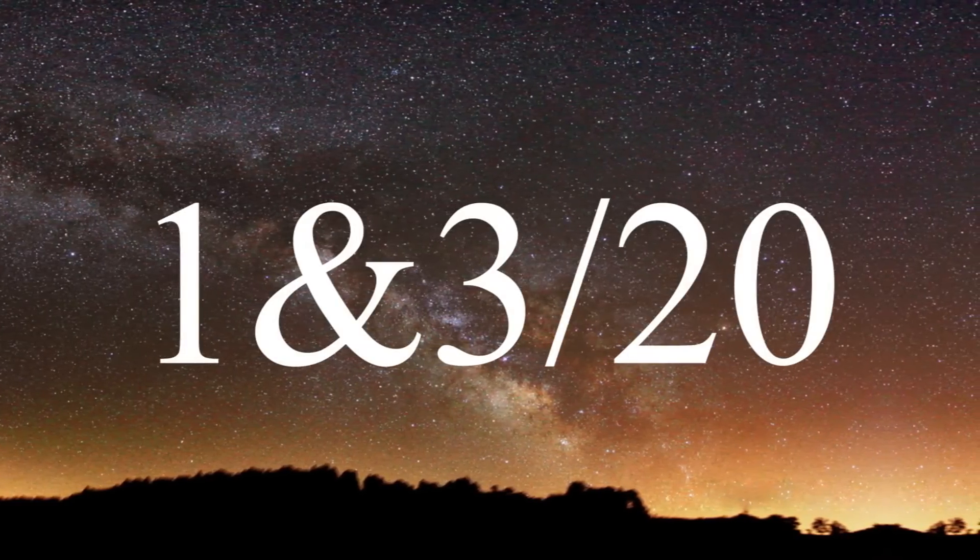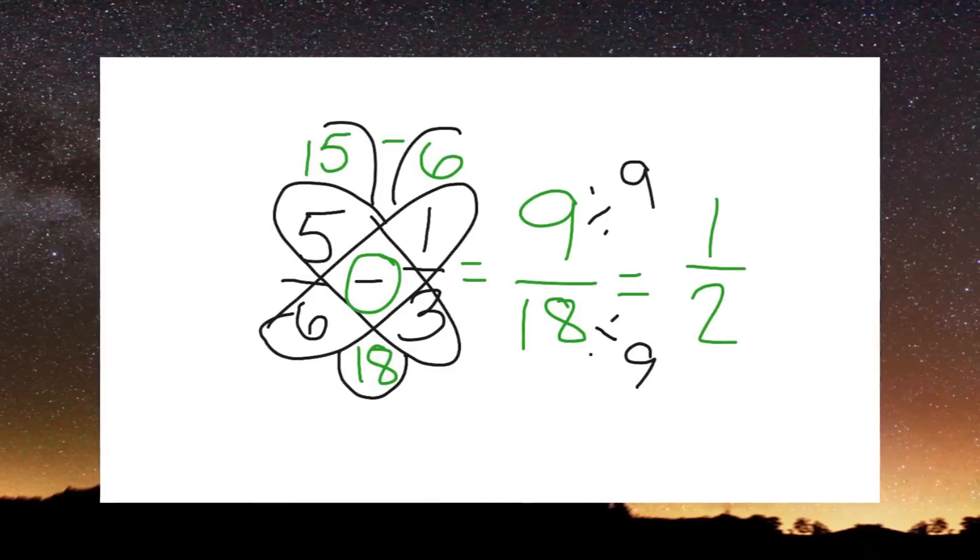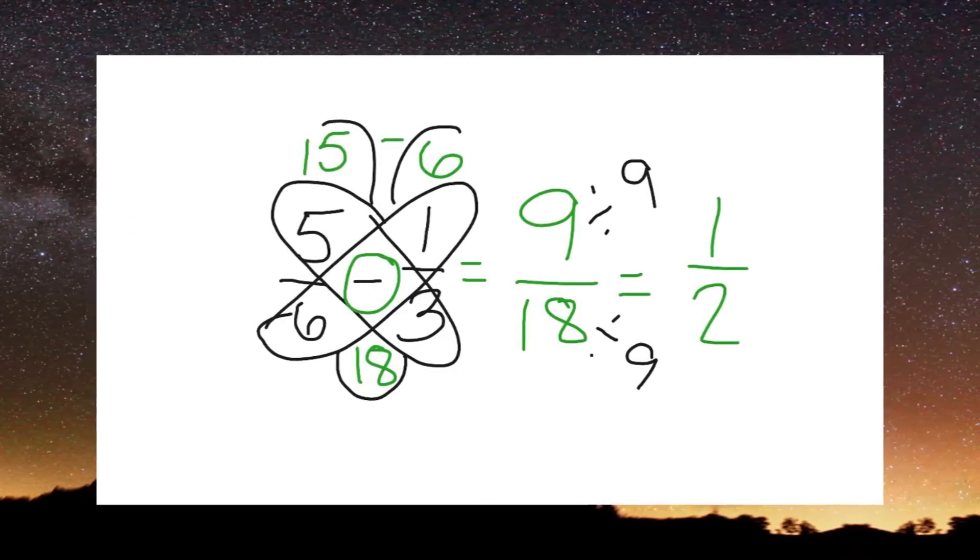Finally, simplify that number down to 1 and 3 twentieths. When you figure it out this way, you don't need to find the common denominator.